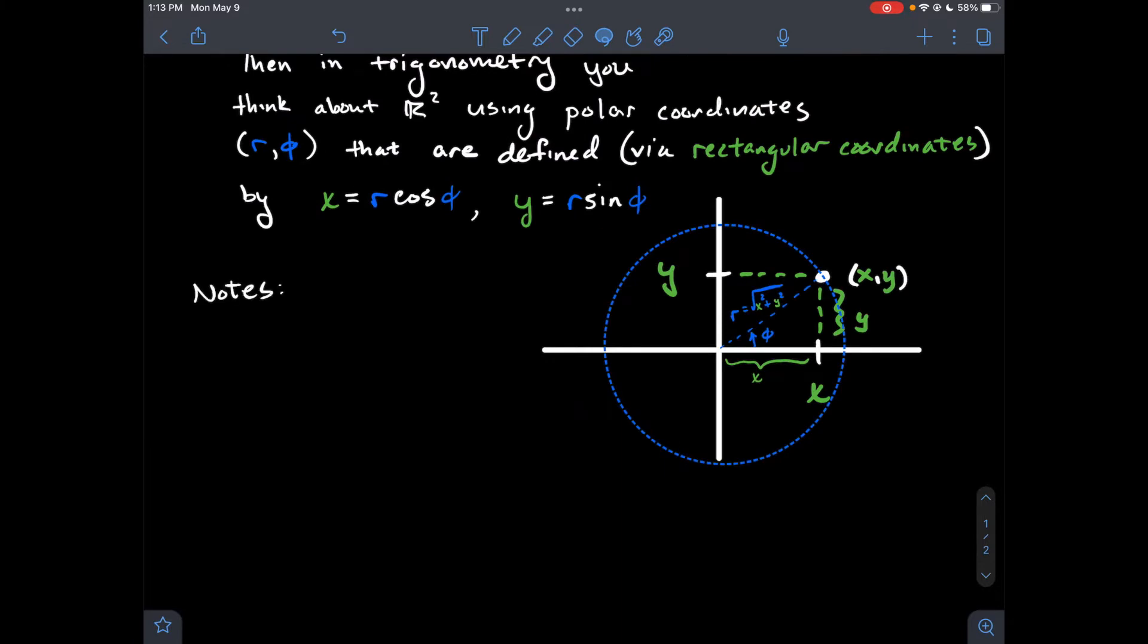Okay. So some notes about this. Again, still no complex numbers yet. Just talking about stuff from the plane. Some notes about this. Only the origin has a radius of zero. So when I think about polar coordinates for the origin, I'm just going to put zero. Zero has a radius of zero. Otherwise, a point should always have a positive radius.